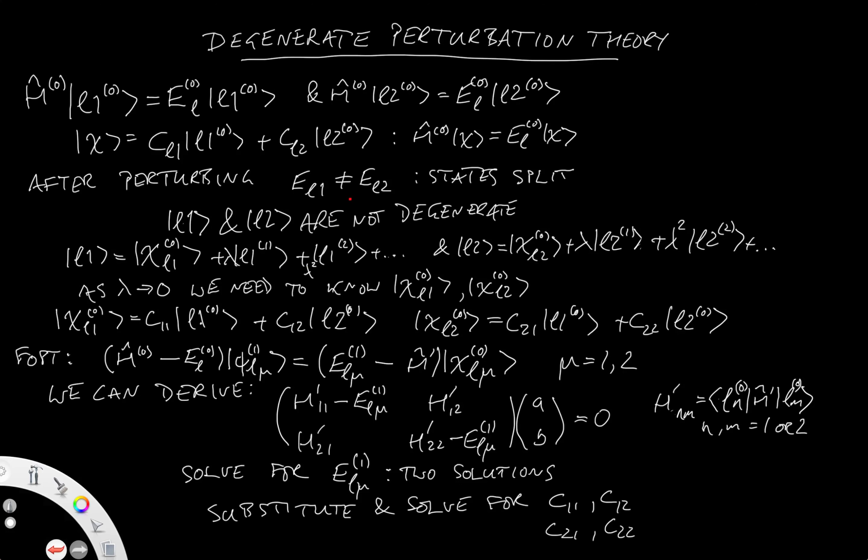So let's just recap. The approach that we're taking in degenerate perturbation theory is slightly different to the standard approach. We realize that we can make arbitrary linear combinations of the degenerate states, and we need to seek the correct linear combination to give us the starting states, the correct unperturbed states. We do that by defining these parameters, chi_L1 and chi_L2, in terms of the original states, however we've solved those, multiplied by appropriate parameters.